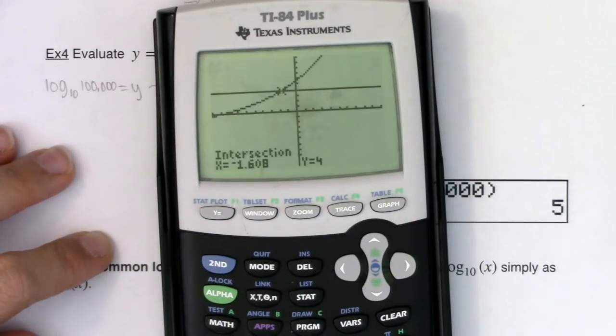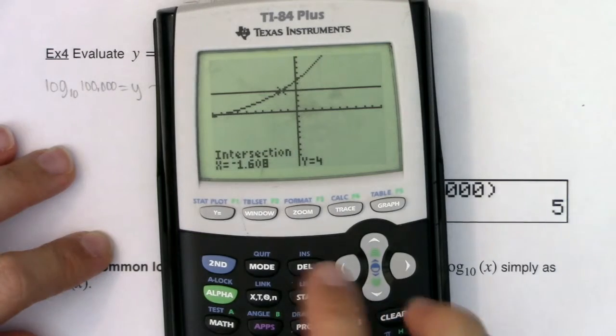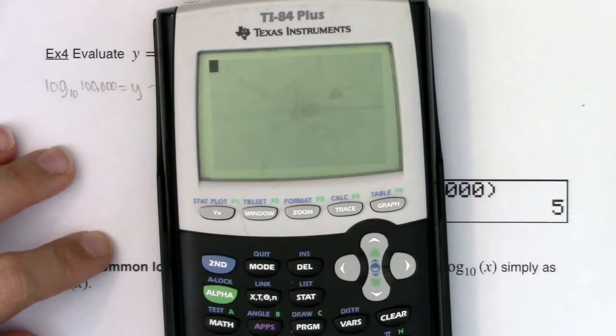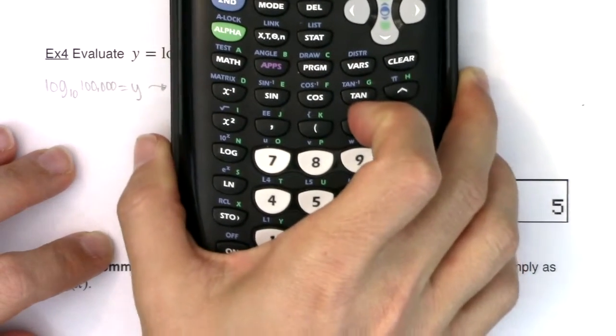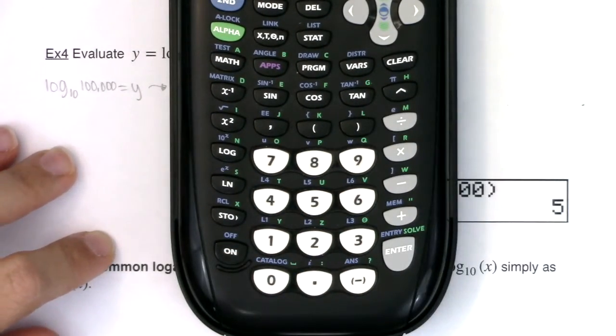Let's turn this thing on. Looks like I was in my graph screen. I'm going to go home by hitting second and mode. I'm going to just scroll down a little bit so we can see the bottom half of my calculator.